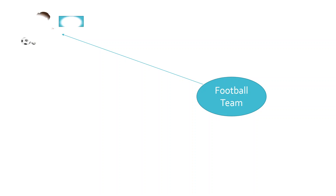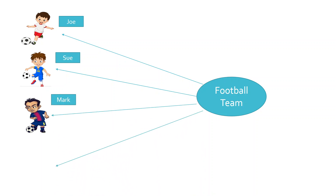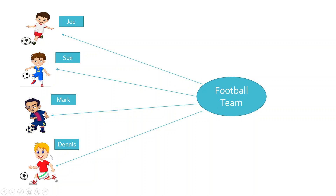In my first video, we had discussed a layman example. The example is that the football team is represented by its players. Now this football team does not have its own identity. The performance of the football team depends on the performance of these players.